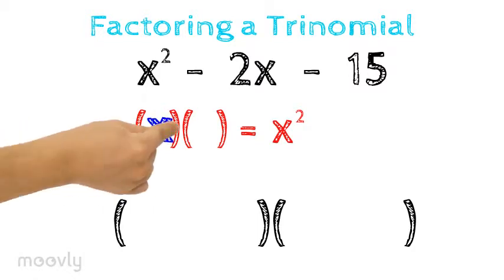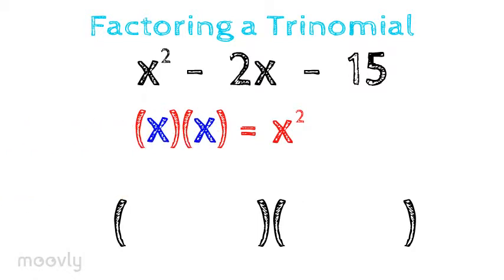We'll start by looking at the first term of the expression to determine what two things we could multiply to end up with x squared. It looks like x times x will do the trick. They move into the parentheses.